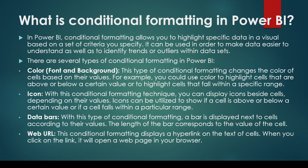You have different kinds of conditional formatting options. You can have color, which includes font and background. This type of conditional formatting changes the color of the cell based on their value — basically the font or the background — and you can color or highlight cells that are above or below certain values, or highlight cells that fall within a specific range.